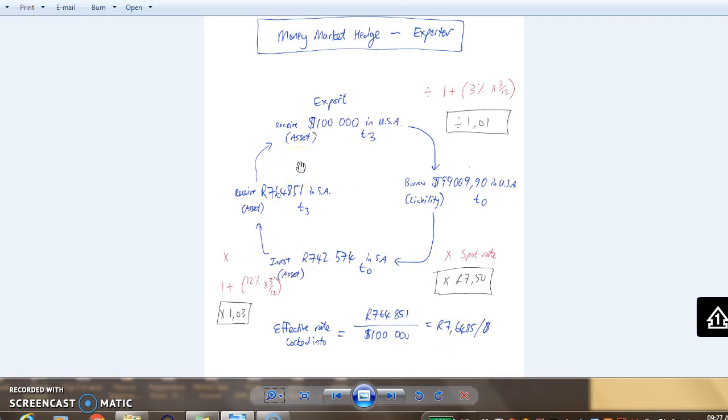What will the cash flows be? On the transaction date we borrow in the US and invest in South Africa. Then we incur interest in the US and earn interest in South Africa.